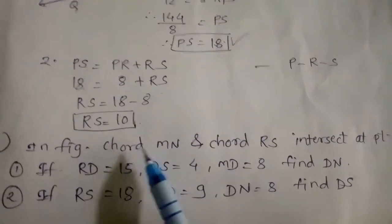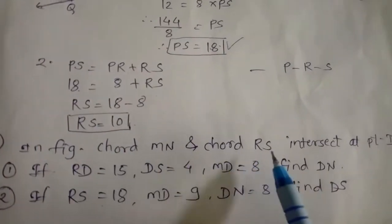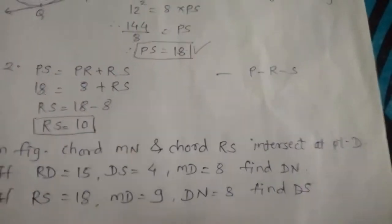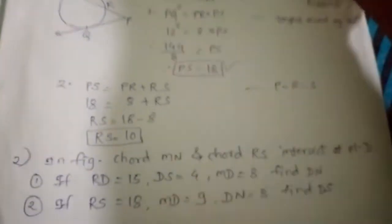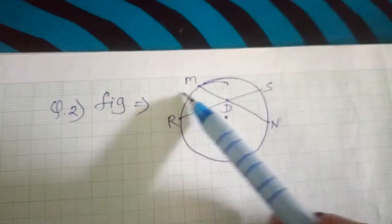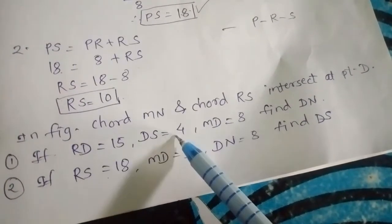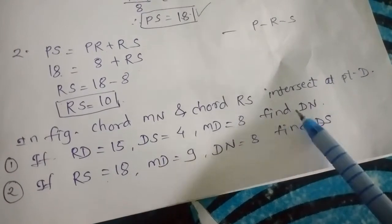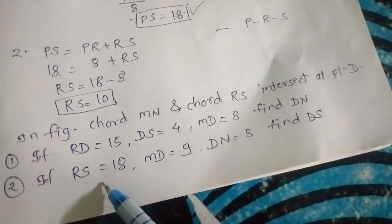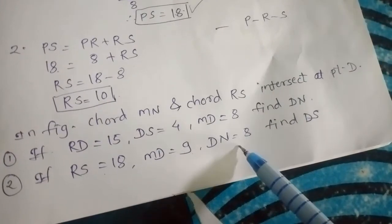Now see example number two. In the figure, chord MN and chord RS intersect at point D. First question: if RD = 15, DS = 4, MD = 8, find DN. Second question: RS = 18, MD = 9, DN = 8, find DS.